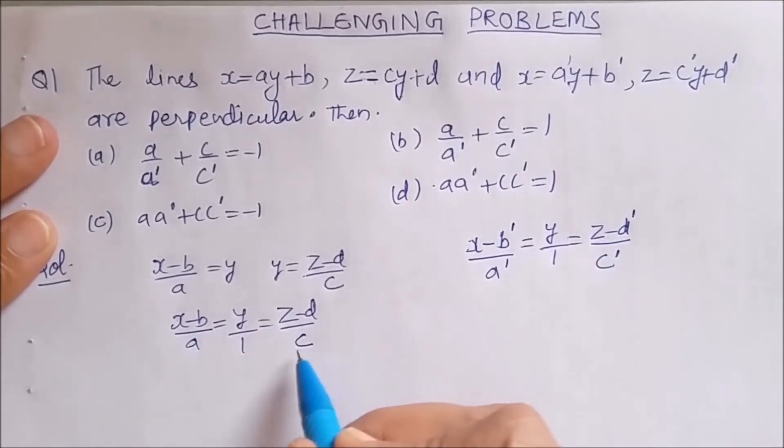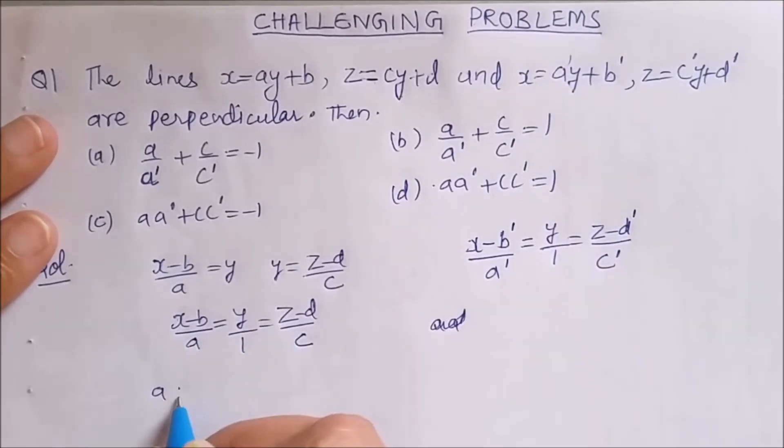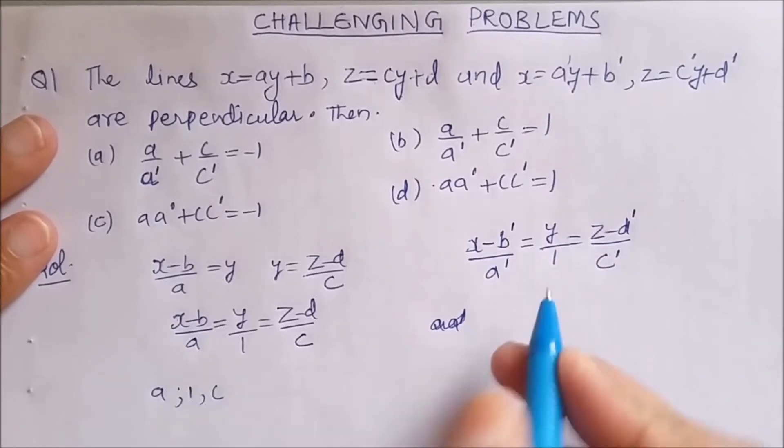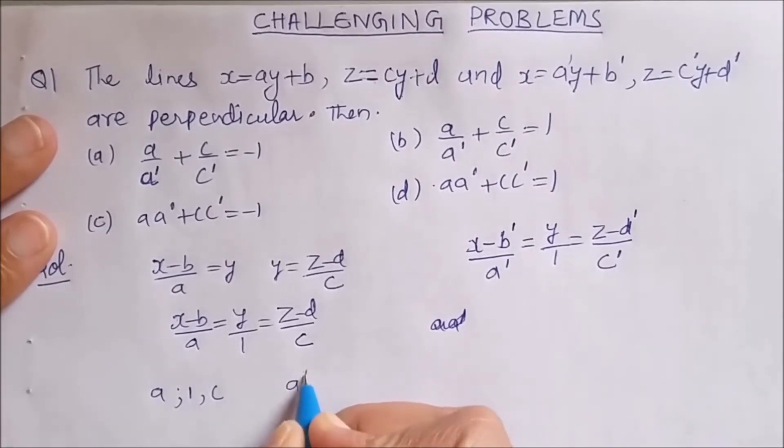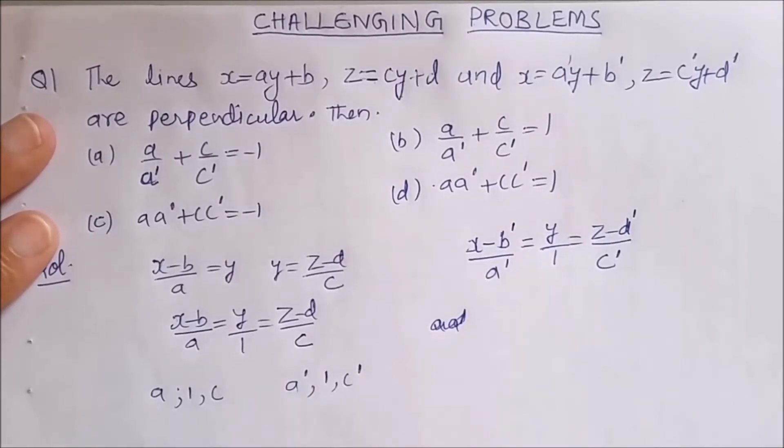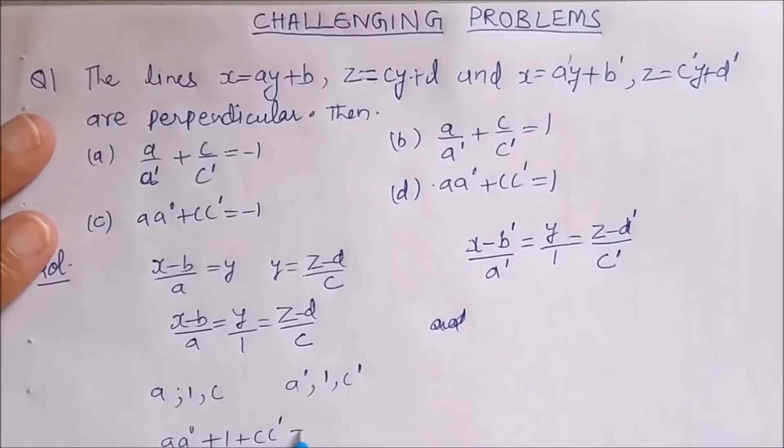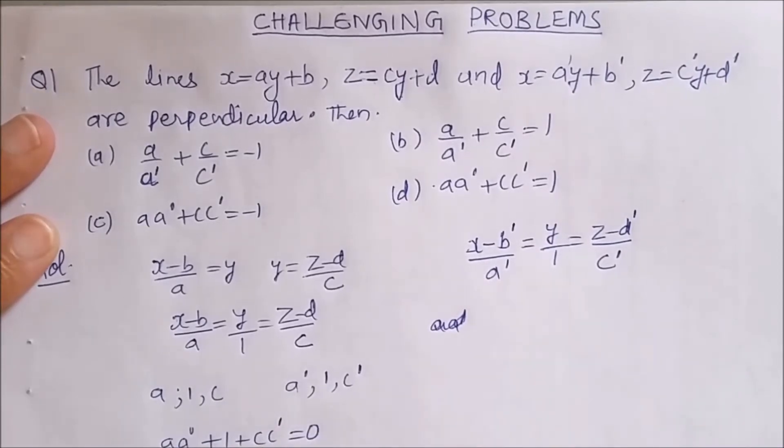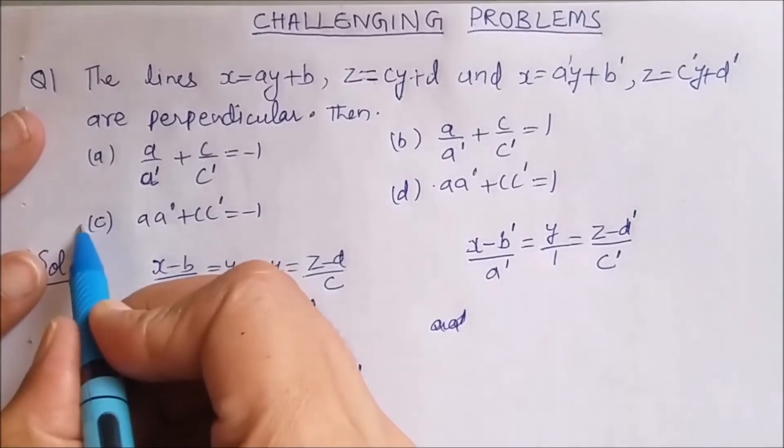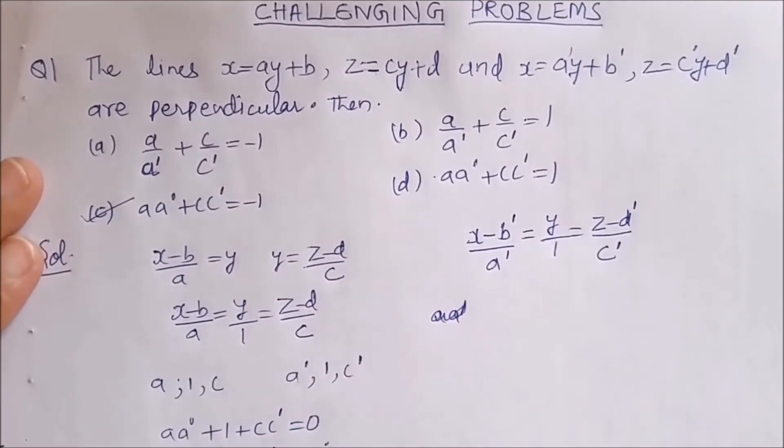Now direction ratios for these two lines are a, 1, c and for second line this is a', 1 and c'. So we can say that aa' + 1 + cc' = 0. This gives aa' + cc' = -1. This is our option number C. Now let us see one more.